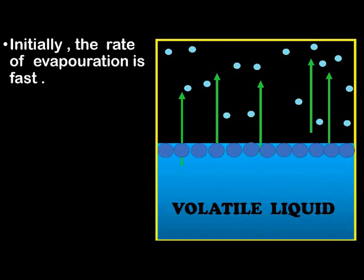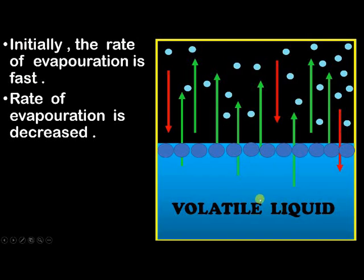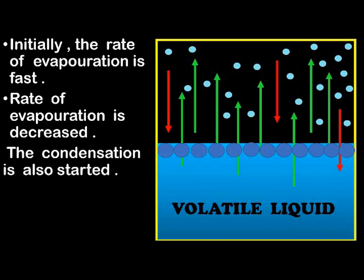After some time, we observe that the liquid is still evaporating and forming vapors, but now it is doing so slowly — the rate of evaporation has decreased. We also observe that the vapor molecules have started turning back into liquid, which is called condensation. So now condensation has also started.